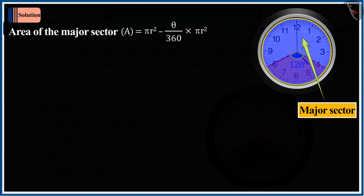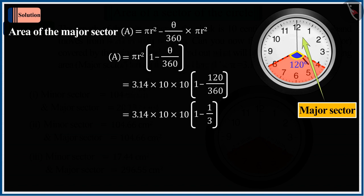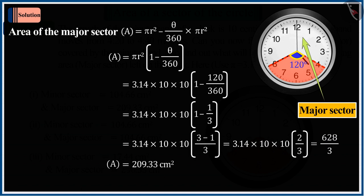from the area of the whole circle, the area of minor sector is subtracted. On solving this, the value of A found to be 209.33 square centimeters.